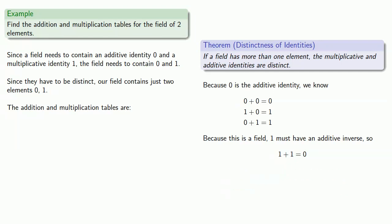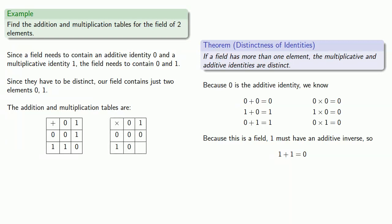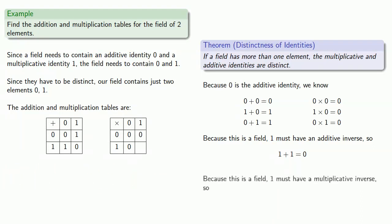We can form our multiplication table in the same way. Because 0 is the additive identity, we know that 0 times 0, 1 times 0, and 0 times 1 are all equal to 0. And because this is a field and 1 is not the additive identity, then 1 must have a multiplicative inverse, so 1 times something has to give you 1. The only choice we have is 1 itself, and so 1 times 1 must be 1. That gives us the addition and multiplication tables for a field with 2 elements.